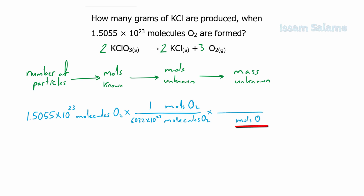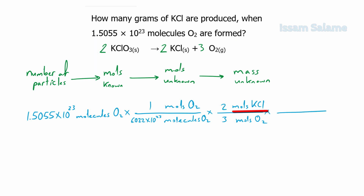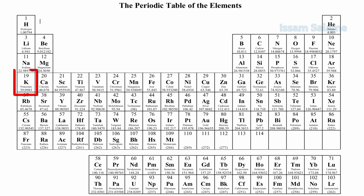We put moles of oxygen in the denominator and moles of potassium chloride in the numerator. The coefficients from the balanced equation give us 3 next to moles of oxygen and 2 next to moles of potassium chloride. Then we convert moles of potassium chloride to mass by multiplying with a fraction — moles in the denominator and grams in the numerator. From the periodic table, the molar mass of potassium is 39.1 and chlorine is 35.5.